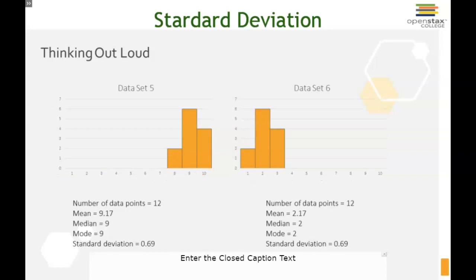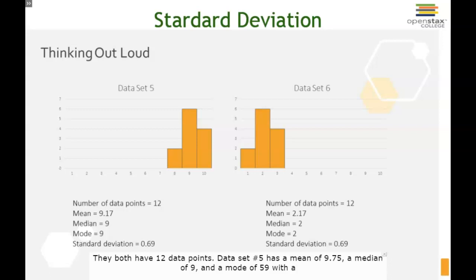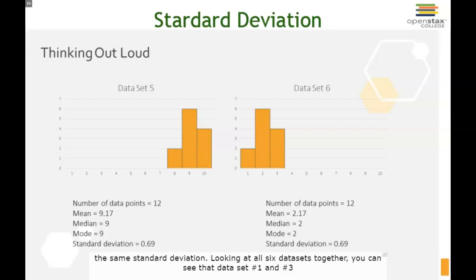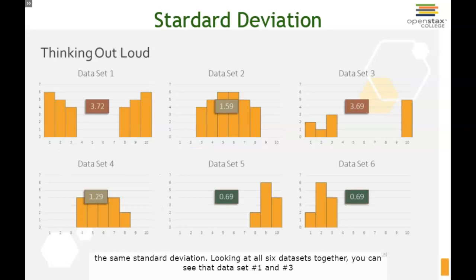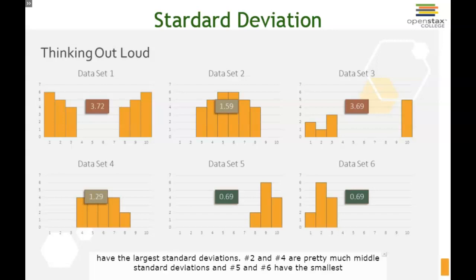Here's the last pair to look at to get a sense of what standard deviation is about. They both have 12 data points. Data set 5 has a mean of 9.75, a median of 9, a mode of 9, with a standard deviation of 0.69. Data set 6 has a smaller mean of 2.17, a median of 2, a mode of 2, but the same standard deviation. Looking at all 6 data sets together, data sets 1 and 3 have the largest standard deviations, 2 and 4 are in the middle, and 5 and 6 have the smallest.